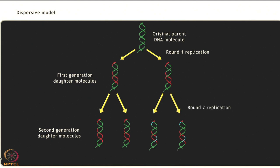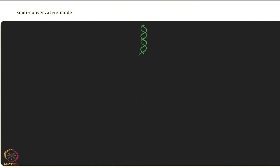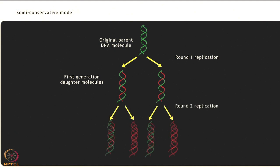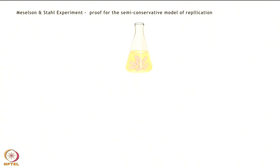According to the semi-conservative model of replication, each parental strand acts as a template for the synthesis of a new strand of DNA which is complementary to the parental strand. Each daughter DNA molecule always has one parental DNA strand and one newly synthesized daughter strand. Of the three replication models suggested, Meselson and Stahl proved that the semi-conservative model was correct.